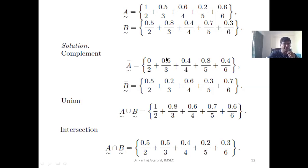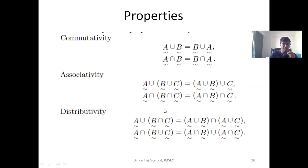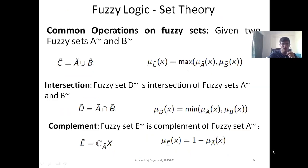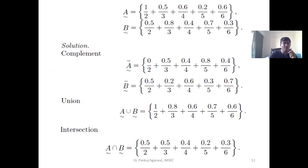For example, for this fuzzy set A, if I have to make a complement of B — the complement was represented as 1 minus the value contained in the fuzzy set. So if the value was 0.5, in the complement set it would be 1 minus 0.5; it would be 1 minus 0.8; it would be 1 minus 0.4. Similarly, this complement set would be represented — this is the fuzzy complement set.